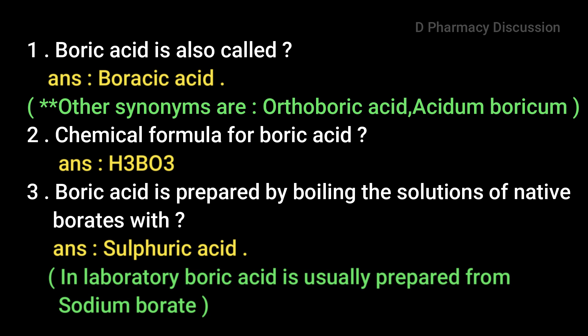Ok, now you can go through the questions and answers. First question: Boric acid is also called Boracic Acid. Other synonyms are Orthoboric Acid and Acidum Boricum. Next question: the chemical formula for Boric Acid is H3BO3.